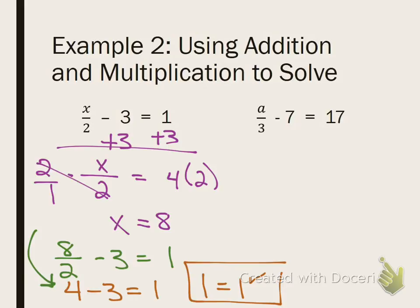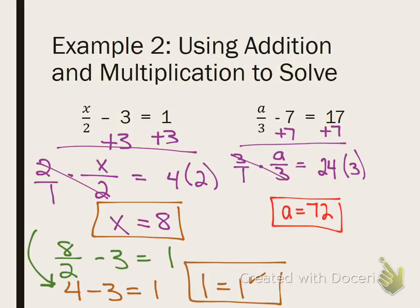What do I do to both sides first? Someone raise your hand and tell me. Jared. I need to add what? Add 7 to both sides. Very good. Now I have a over 3 equals 24. Now what do I do, Samantha? Multiply 3. Multiply 3 by both sides. Very good. And I get 72. Raise your hand if you got 72. Awesome. Good job. Questions, guys? Any questions at all? If you missed it, do you see where you went wrong? Alright. Moving on to example 3.